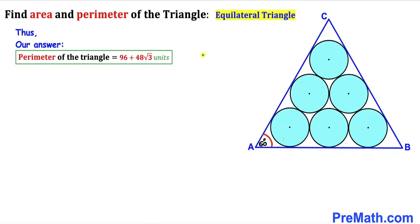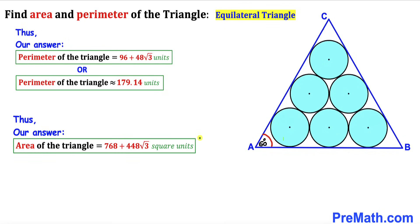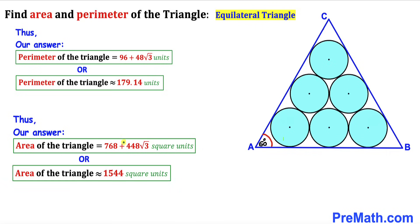Thus the perimeter of triangle ABC is 96 + 48√3, which is approximately 179.14 units, and the area of triangle ABC is 768 + 448√3, which is approximately 1544 square units. Thanks for watching, and don't forget to subscribe to my channel for more exciting videos!